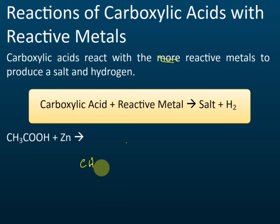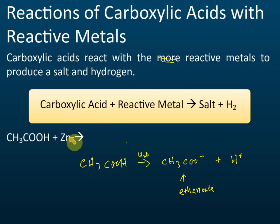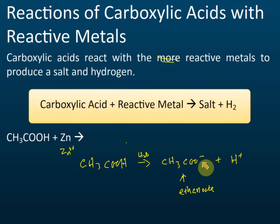When ethanoic acid is dissolved in water, it dissociates into CH₃COO⁻ (ethanoate ions) plus hydrogen ions. These ethanoate ions will react with zinc, which has a charge of 2+. Since the charge on zinc is 2+ and the ethanoate ion is 1−, one zinc ion can react with two ethanoate ions.